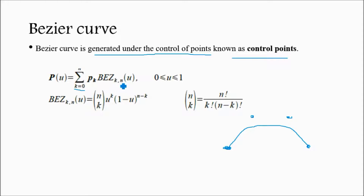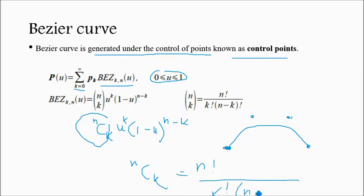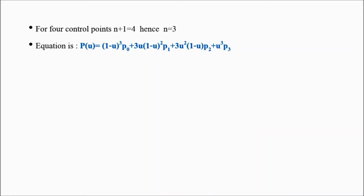The Bezier curve is represented with the equation p(u) = summation from k=0 to n of p(k) times Bezier(k,n) of u, where Bezier(k,n) of u is the Bezier blending function, with u values between 0 and 1. The Bezier blending function is defined as n_C_k times u raised to k times (1 minus u) raised to (n minus k), where the combination value n_C_k equals n factorial divided by k factorial times (n minus k) factorial.